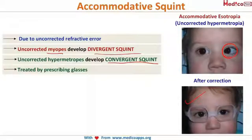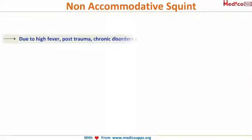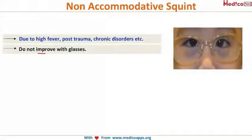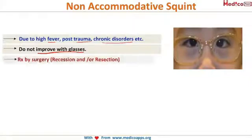In non-accommodative squint, there is no improvement with glasses. It occurs due to high fever, trauma, or chronic disorders. Because glasses do not help, the only management option is surgery — involving recession and resection procedures.